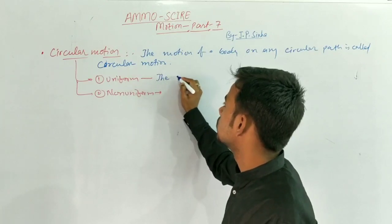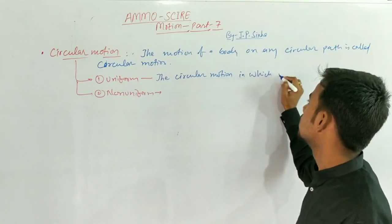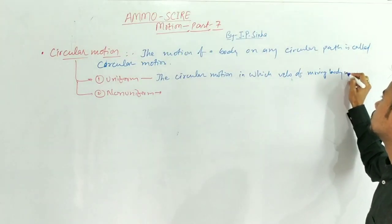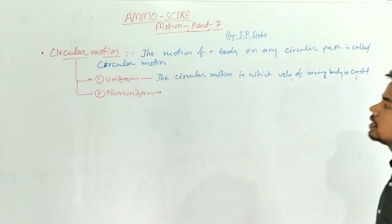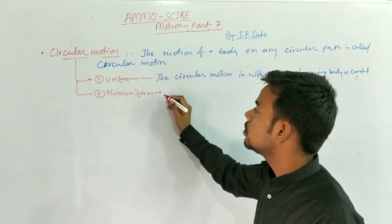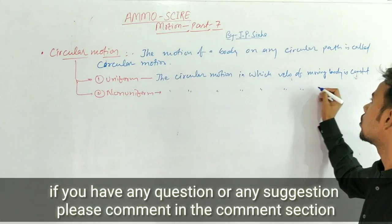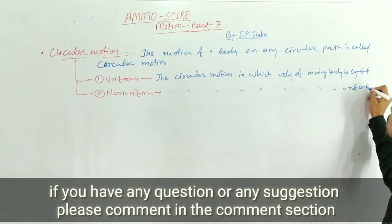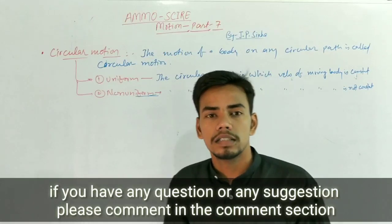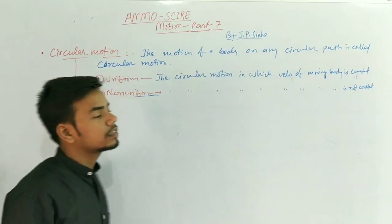If the body does not maintain its uniform velocity, then it will be called non-uniform circular motion. Uniform circular motion ko hum log keh sakte hain: the circular motion in which the velocity of the moving body is constant. Non-uniform circular motion: the circular motion in which the velocity of moving body is not constant. Toh yeh circular motion ke baare mein discussion ho gaya.